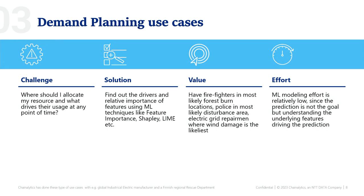The third use case, still in the demand planning space, is about where you should put your resources based on demand — in other words, the supply side of demand. In these cases, the numerical forecast is not the most important thing. It's much more important to understand the drivers behind the model: what are the features, the information, the cross-correlations, and the underlying reasons why the model is predicting certain things. Based on that information, people can make good decisions. We have used this with public organizations like firefighters and rescue departments, who can get much more value from the underlying reasoning behind the prediction rather than the actual predicted number.